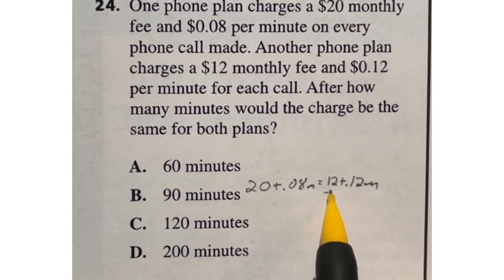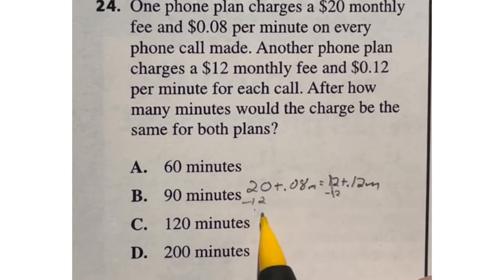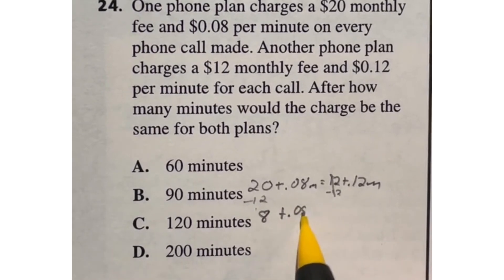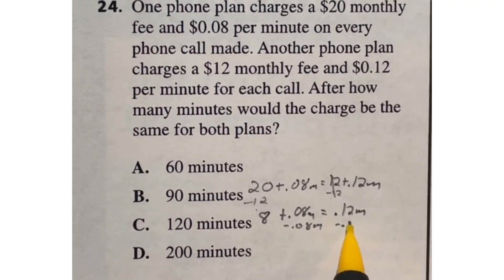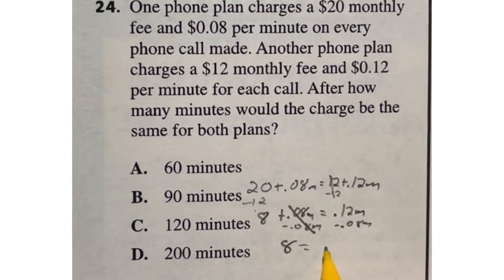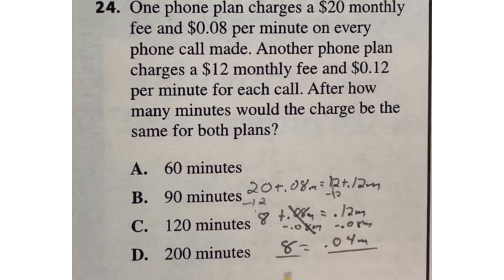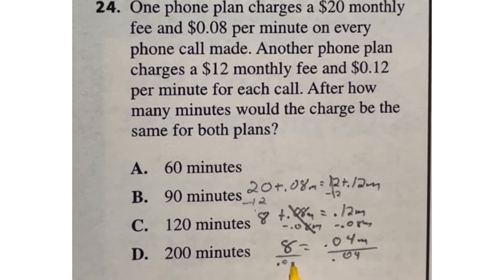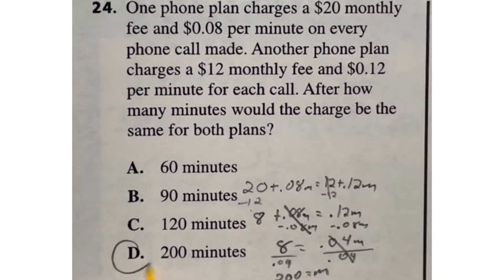So we're just solving for M here. First thing I want to do is get M by itself by subtracting 12 from both sides. That means 20 minus 12 is going to end up giving me eight plus 0.08M equals 0.12M. I'm going to subtract the 0.08M from each side. Now what this is going to do is leave me with eight is equal to, 12 minus eight is going to give me 0.04M. And now I need to divide both sides by this 0.04 to get M by itself. So 8 divided by 4 is 2, and then you got to move the decimal over twice, which would give you 200. So that means that after 200 minutes, these two plans would be equal. So answer is D.